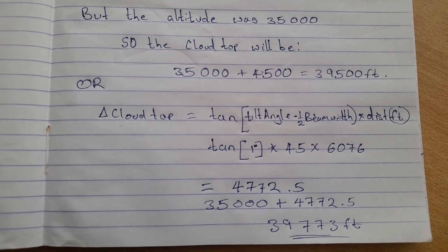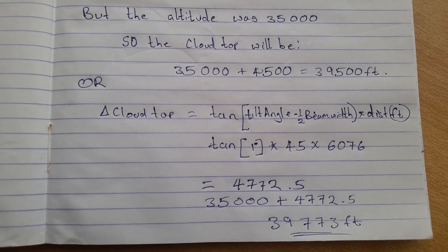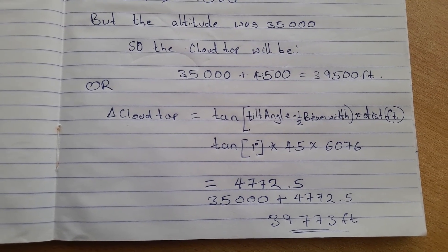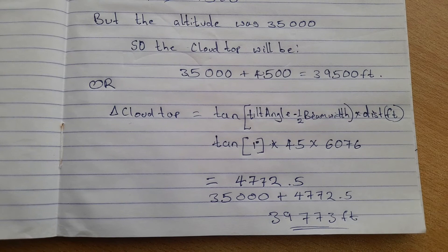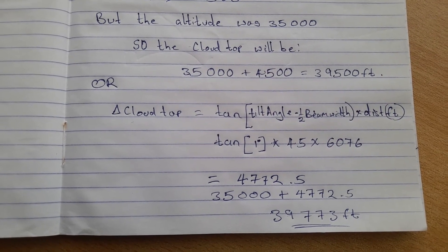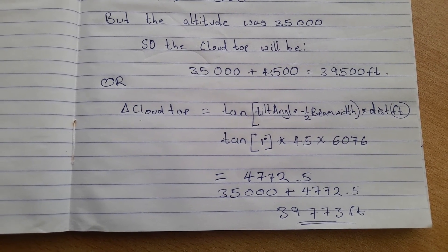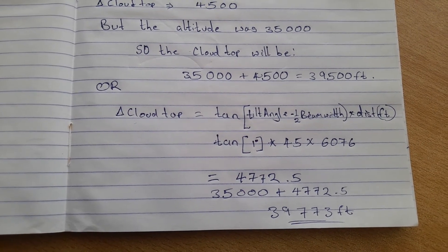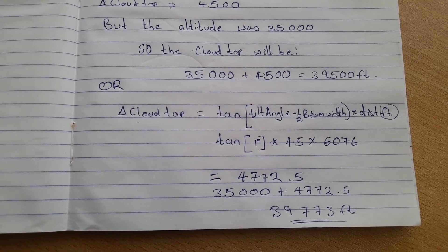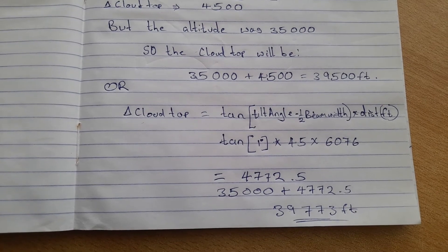So you get 4,772.5 feet, but that's the change in the cloud altitude. The level was 35,000, so you add 4,772 to that and it gives you 39,772 feet. Those two formulas can all be used.